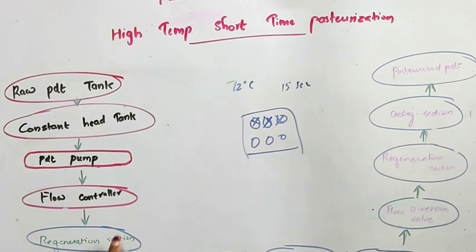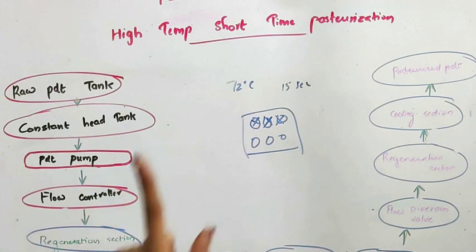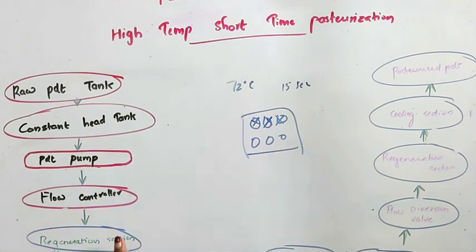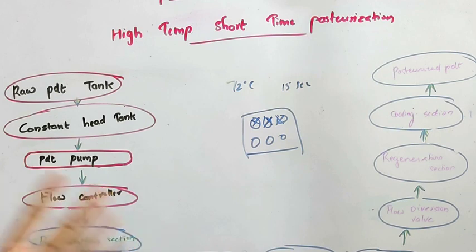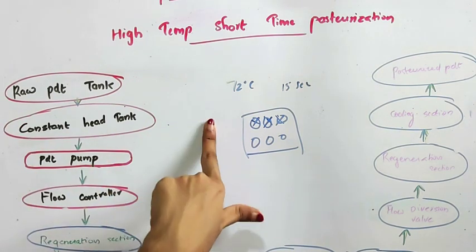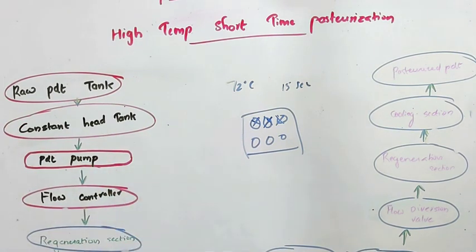In the regeneration section we are heating the milk, but it is not possible to heat the milk up to 72 degrees Celsius in that section — we can heat it only up to a particular extent. The remaining heating up to 72 degrees Celsius is carried out in this heating section.